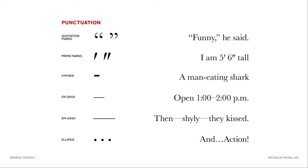Next we have an em dash, which is used for longer pauses than what a comma can give you. In writing, it is used to insert a thought that relates to the main part of the sentence but is slightly different — you want to stop the reader and give them more information to ponder before continuing on. You get an em dash by holding down Shift-Option-Hyphen on a Mac or Shift-Alt-Hyphen on a PC.